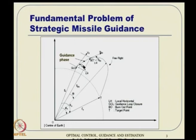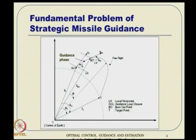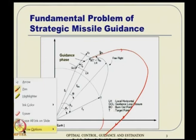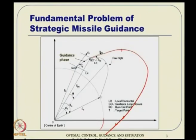This problem can be extended to launch vehicle guidance as well, because what you are looking for is a condition with a much larger velocity so that the trajectory does not intersect the earth — it goes round and round, essentially leading to a satellite orbit. So this method is relevant to both ballistic missile guidance and launch vehicle ascent phase guidance in general.